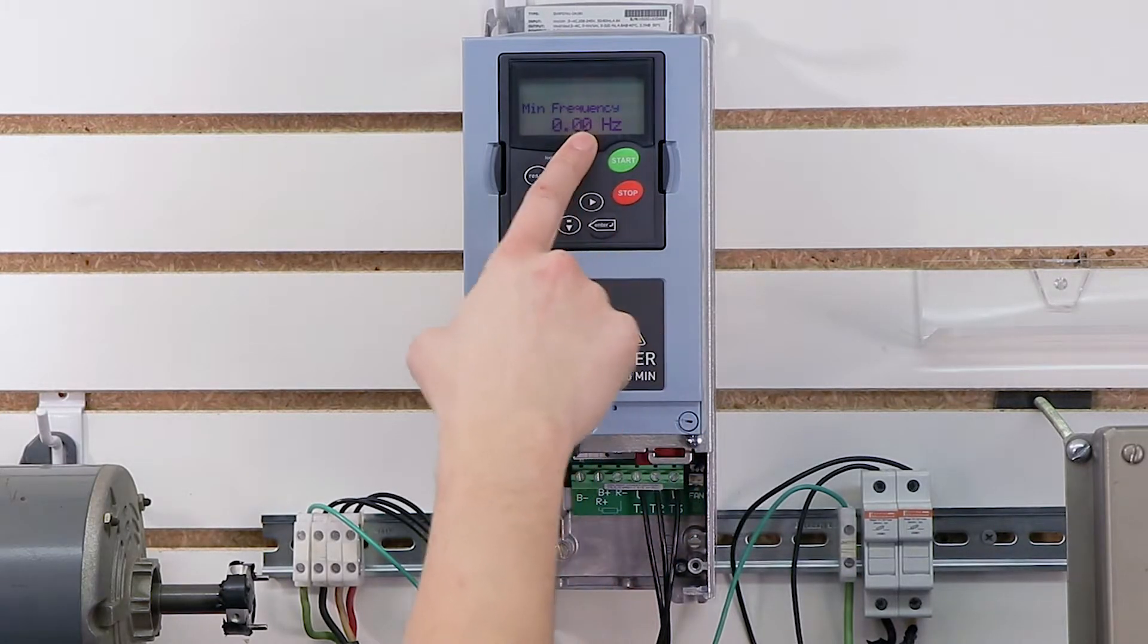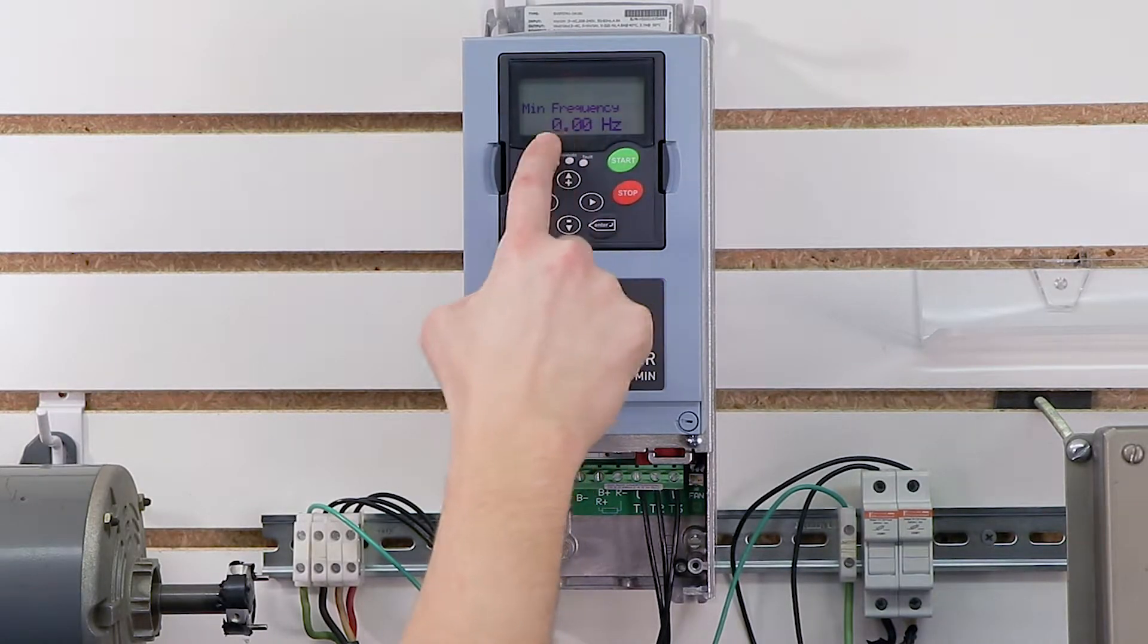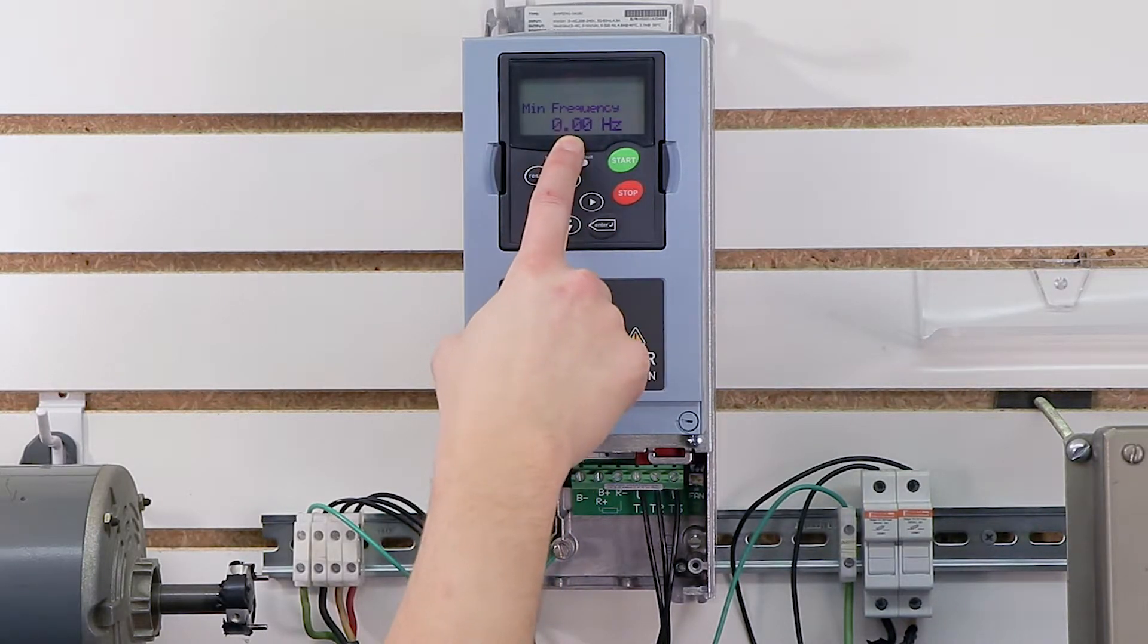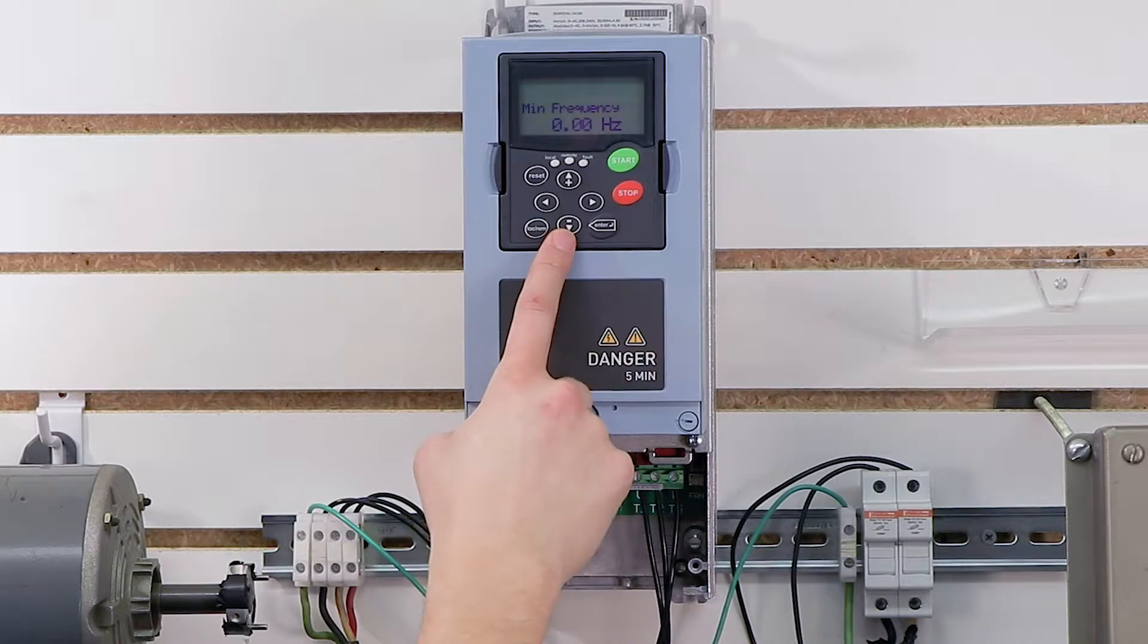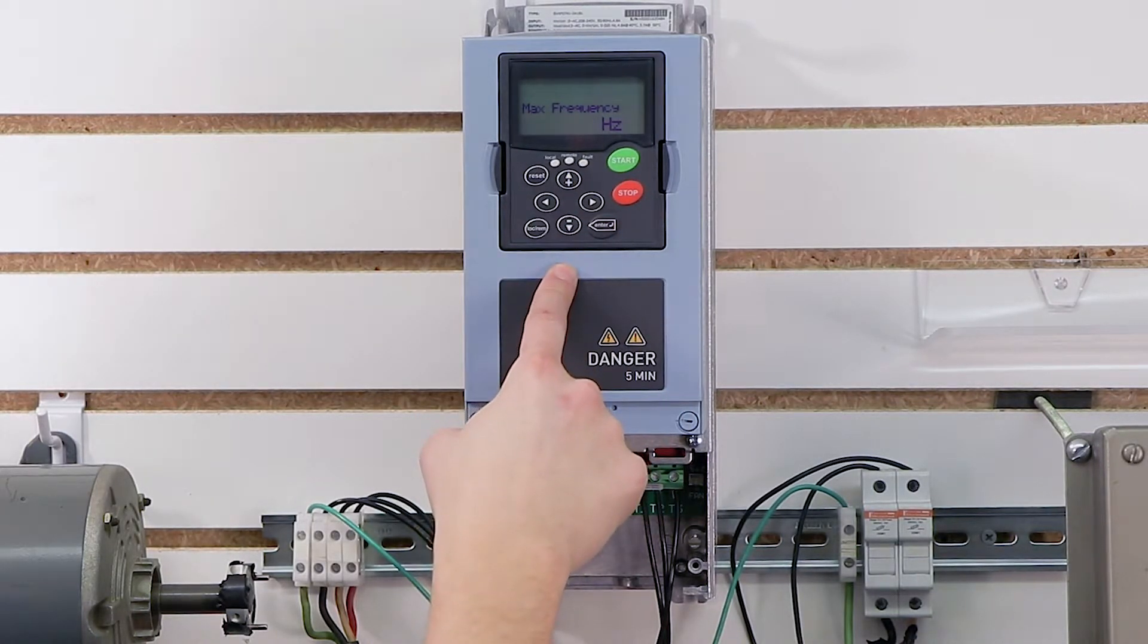Now I get to choose my minimum frequency. That's my minimum speed of my motor. If I wanted to say, for example, never run lower than 30 Hertz, I could set that here. But in my application, I'm going to leave it at zero so that I can actually stop the motor if I want to.